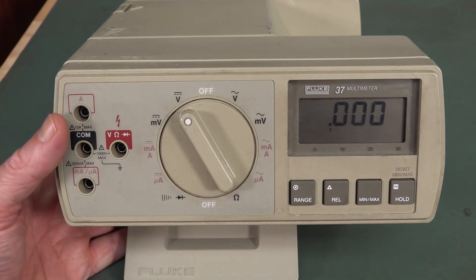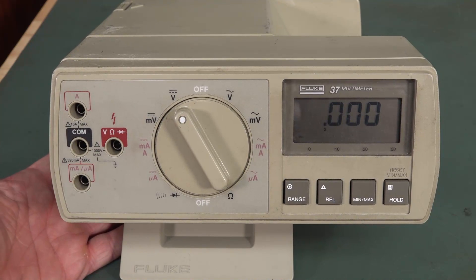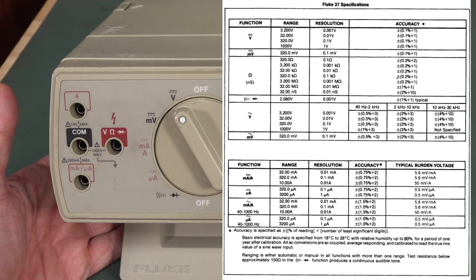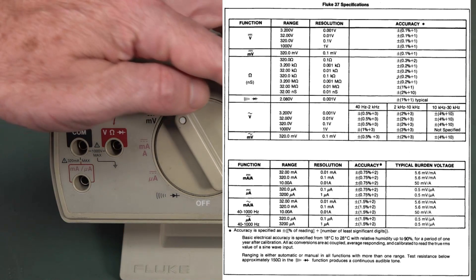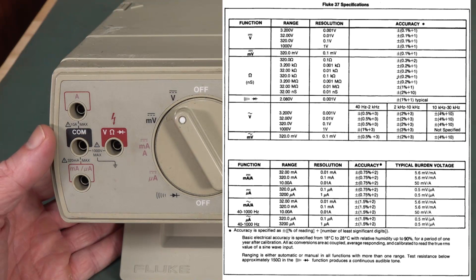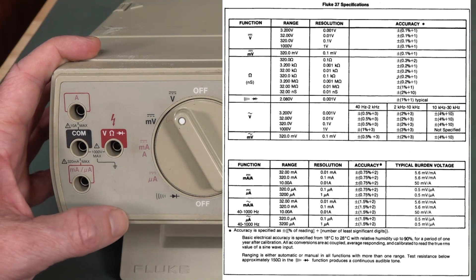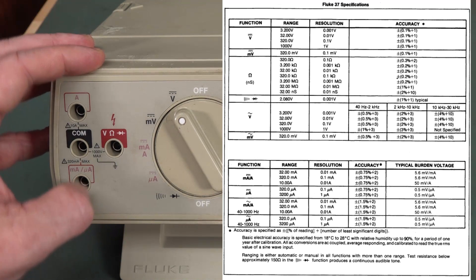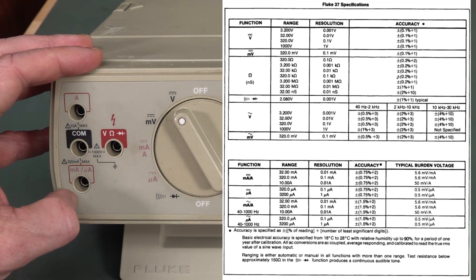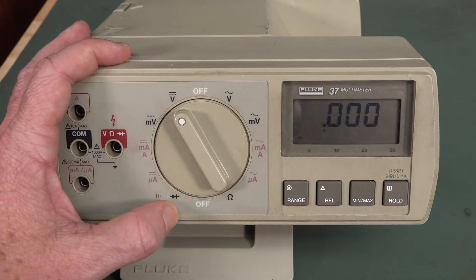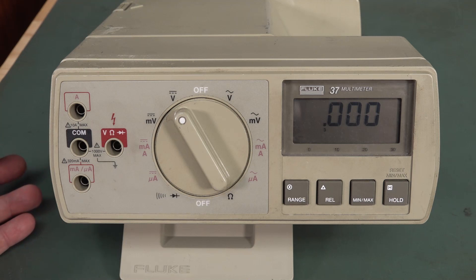And it's basically got identical specs to the Fluke 27 as I showed. It's a basic accuracy 0.1%. It's got 3,200 counts, about 0.2% on ohms. Current isn't that terrific. Burden voltage, I can't remember the exact burden voltage, but it's not that terrific. But it's got your basic functionality. It's got your diode and continuity. None of that capacitance rubbish.